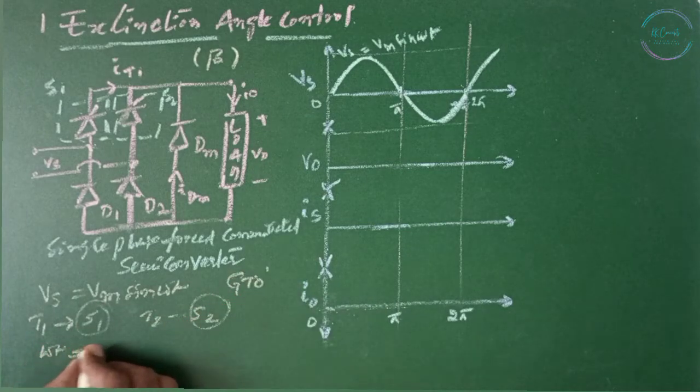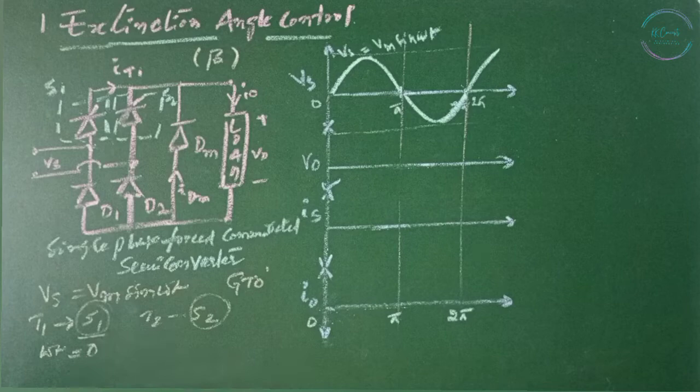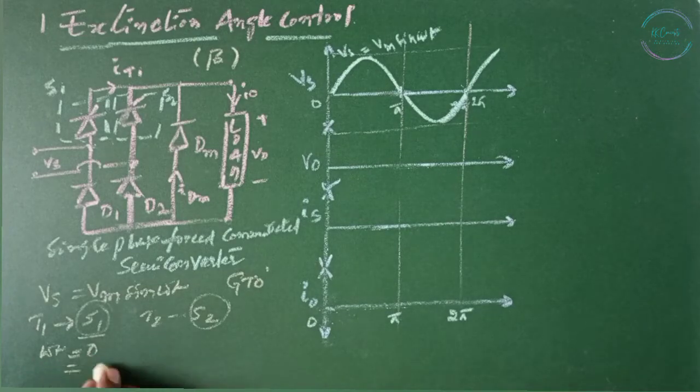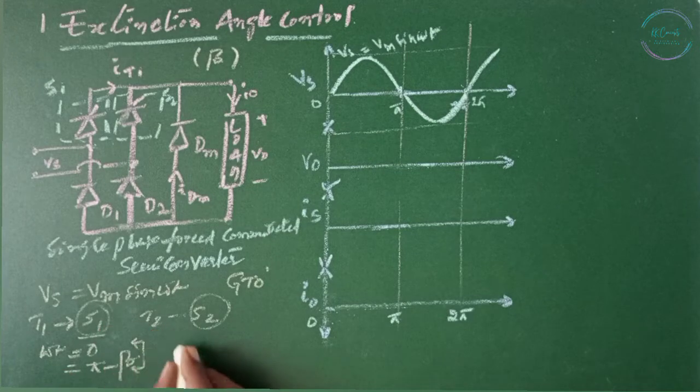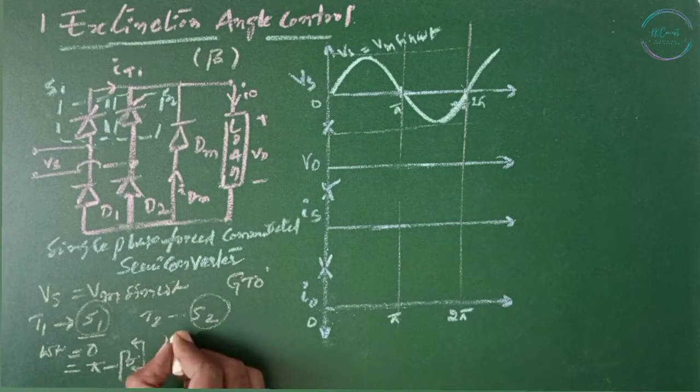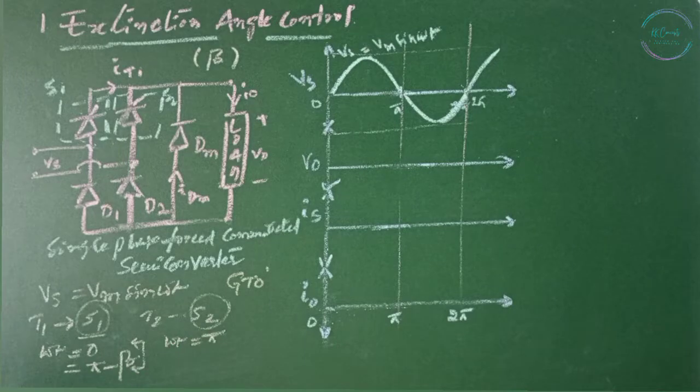At omega t equals 0, we can turn on switch one, and when omega t equals pi minus beta, we need to turn off S1. Similarly, T2 or S2 can be turned on at omega t equals pi, turn off at 2 pi minus beta, where beta is the extinction angle.